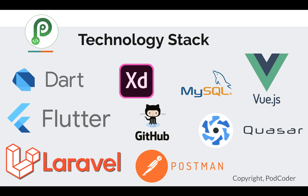These are the technologies that we will cover in this course. We'll use Dart and Flutter to develop our mobile application. We'll use Laravel and MySQL to develop our backend. We'll use Vue.js and the Core framework to develop our frontend. We'll use Adobe XD to design our app, GitHub to share our code and collaborate, and finally Postman to test our APIs.